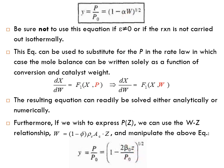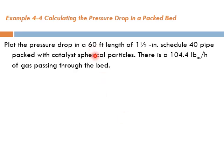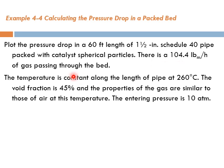Let's take an example to have a feeling of all these equations. Calculating the pressure drop in a packed bed: plot the pressure drop in a 60-foot length of 1.5-inch schedule 40 pipe packed with catalyst spherical particles. There is 104.4 pounds mass per hour of gas passing through the bed. The temperature is constant along the length of the pipe at 260°C. The void fraction is 45% and the properties of the gas are similar to those of air at this temperature.